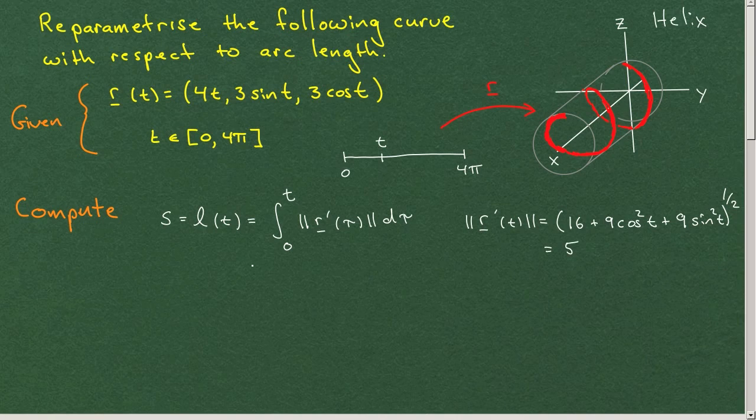So this integral is easy in this case. That's simply the integral from naught to t of 5 dτ, which is equal to 5t.